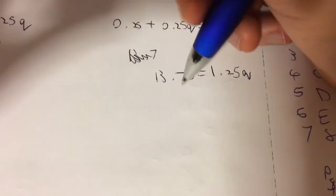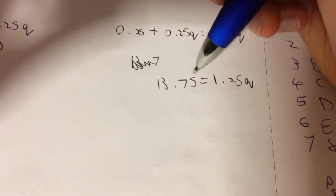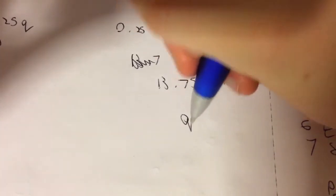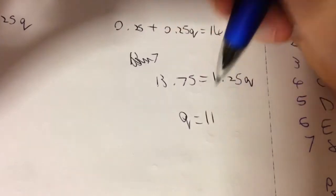So if we make 13.75 divided by 1.25, then that is 11. So Q equals 11.